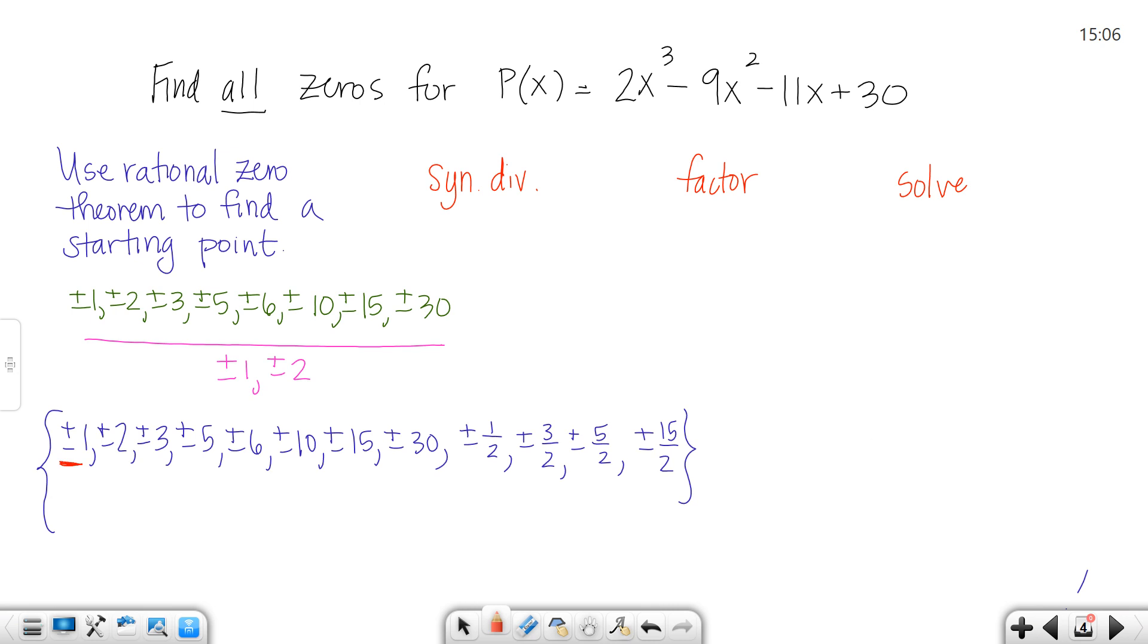I'm going to start with the number 1. I'll use synthetic division with 1. Here goes my synthetic division step. I bring the 2 down, multiply, add, multiply, add, multiply, add. This one did not work. How do you know if it works? You'll know it works if you get a 0 as the remainder. So 1 did not work.